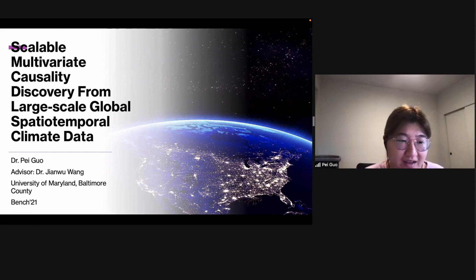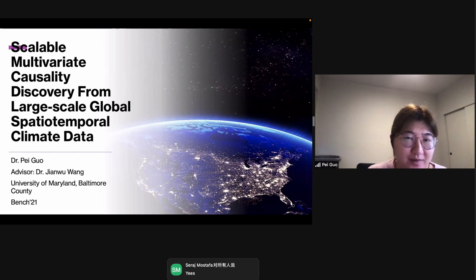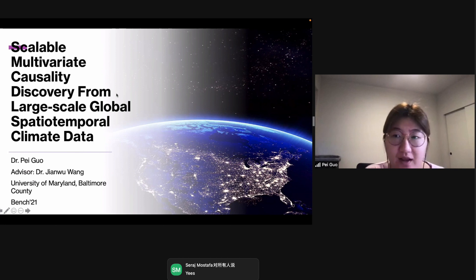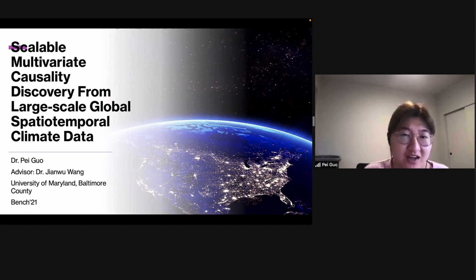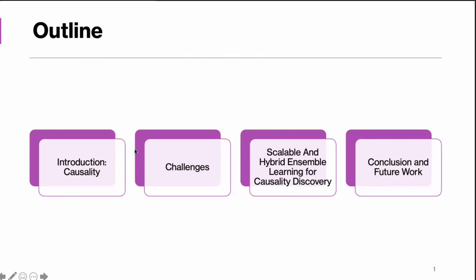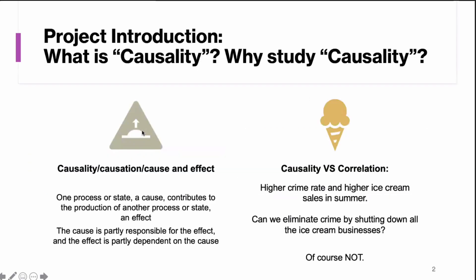Hi everyone, I'm Pei, and today my talk is about my dissertation titled 'A Scalable Multivariate Causality Discovery from Large-Scale Global Spatial-Temporal Climate Data.' My advisor is Dr. Jian Wang, and I did my research at University of Maryland Baltimore County. Here's my outline: I'll introduce what causality is, talk about the challenges, and focus on one part of my dissertation — the scalable and hybrid ensemble learning for causality discovery — and then conclude with future works.